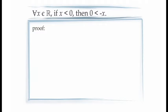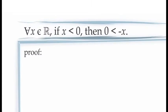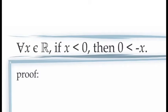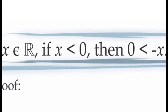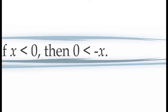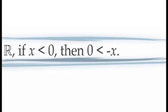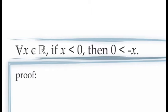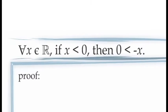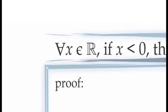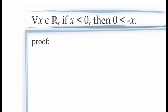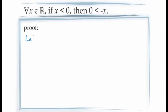We're going to prove the statement: for all x in the real numbers, if x is less than 0, then the negative of x will be greater than 0. Here, the antecedent is the inequality x < 0, and the consequent is the inequality 0 < -x. This proposition starts with the universal quantifier 'for all x in the real numbers,' which means we need to start our proof by introducing x as an arbitrary constant. We do this by including the statement: let x be an element of the real numbers.